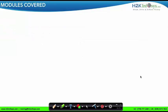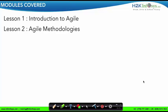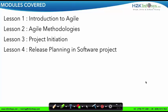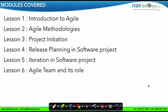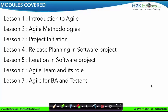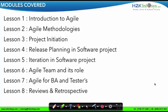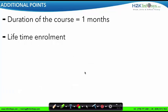Next, let's get an overview of the modules covered in this course. We shall begin with introduction to Agile. Lesson two will be on Agile methodologies. Project initiation is lesson three. Next is release planning — a very important lesson. Iteration planning is lesson five, covering iteration planning and implementation. Next is a lesson on agile team and its roles, followed by pointers about Agile for BAs and testers. The last lesson is on reviews and retrospectives. For the detailed syllabus, visit www.h2kinfosys.com. The total course duration is four weeks, that is one month. This is a lifetime enrollment, meaning students can repeat the course as many times as they want, with fees paid only once.